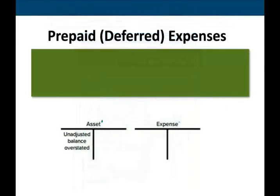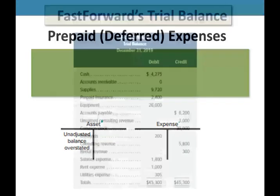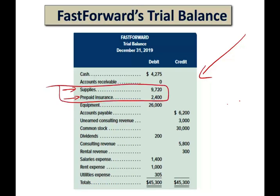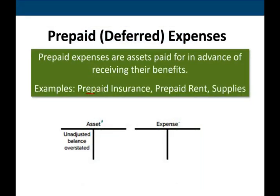The first type of adjustments we're going to work with are prepaid or deferrals. Prepaid expenses are assets paid in advance of receiving their benefits. Going back to the trial balance, we already determined that supplies is a form of prepaid, and prepaid insurance is prepaid — those are the two accounts we need to adjust. Examples are prepaid insurance, prepaid rent, supplies, anything that we prepaid.